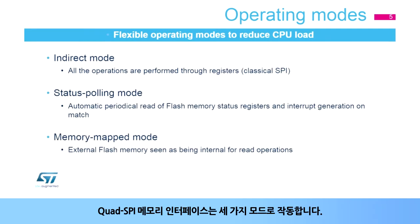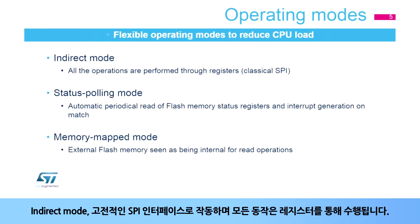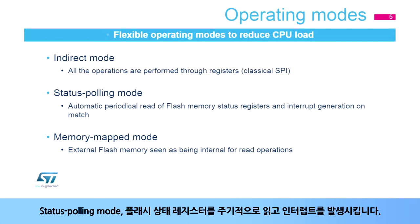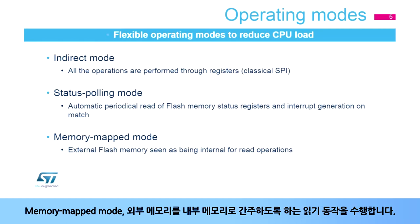The Quad SPI Memory Interface operates in three modes. First, in direct mode, where it behaves as a classical SPI interface and all operations are performed through registers. Second, status polling mode, where the flash status registers are read periodically with interrupt generation. And third, memory mapped mode, where the external memory is seen as an internal memory for read operations.